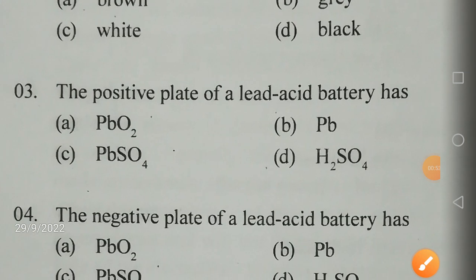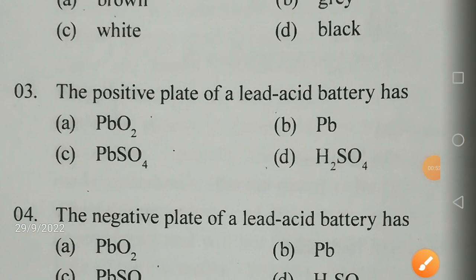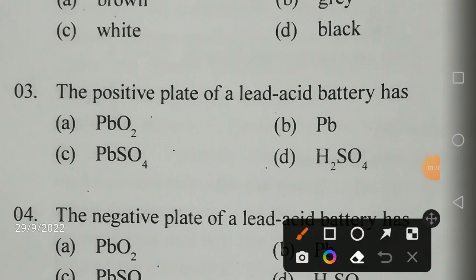The positive plate of a lead acid battery has — what does it have? The options are PbO2, Pb (lead), lead oxide, lead, lead sulfate, or sulfuric acid. The positive plate of a lead acid battery has PbO2, which is lead oxide.